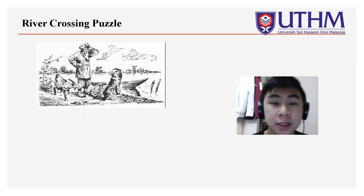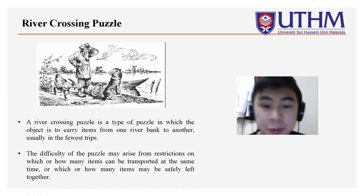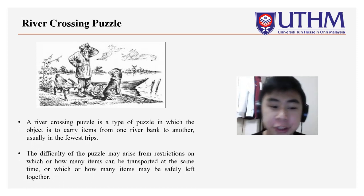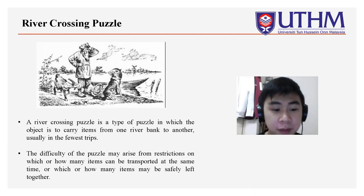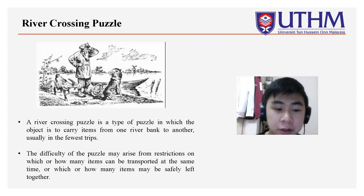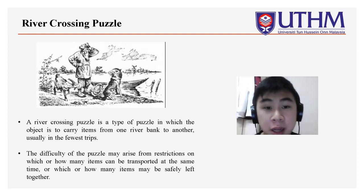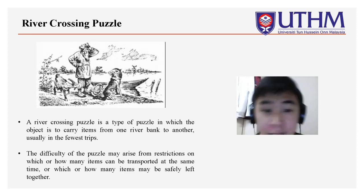So what is a river crossing puzzle? A river crossing puzzle is a type of puzzle in which the object is to carry items from one river bank to another, usually in a few round trips. The difficulty of this puzzle may arise from restrictions on how many objects can be carried at the same time, and also how many objects are safely left together.